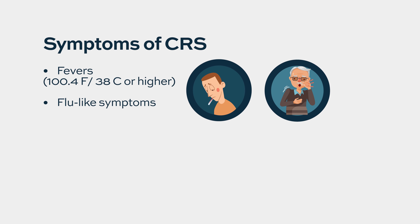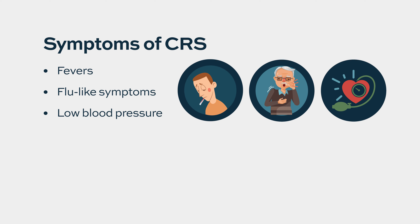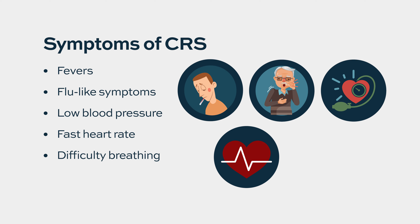In terms of symptoms and signs to look out for: fevers are by far the most common manifestation of CRS in this setting. Because so many patients after CAR-T therapy have a lower immune system, we use the cutoff of 100.4 degrees Fahrenheit or higher — 38 degrees Celsius or higher — as a cutoff for a fever. Sometimes very low body temperatures, like 96 or 97 degrees Fahrenheit, can also be a sign of CRS. CRS can also manifest as low blood pressure, fast heart rates, and difficulty breathing.